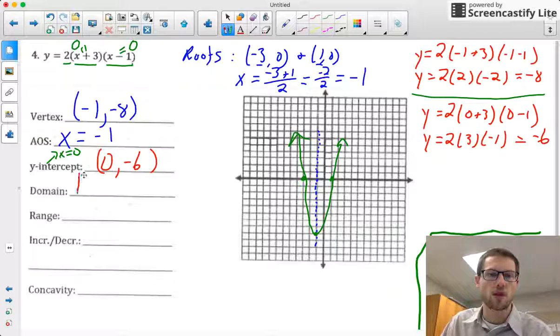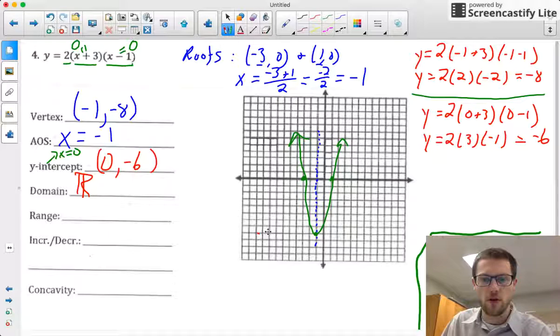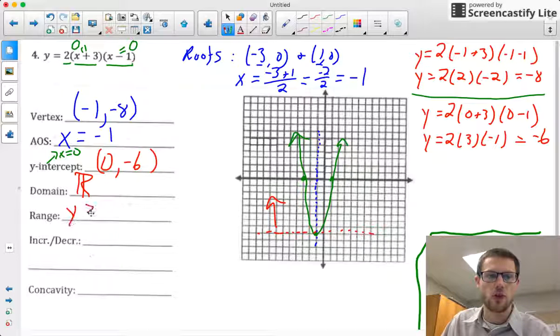My domain is all real numbers, all possible x values in this thing. And my range is everything from this point upwards, so that's going to be given as y ≥ -8.